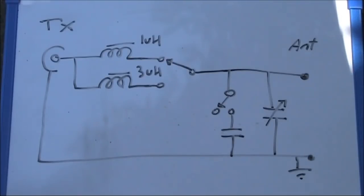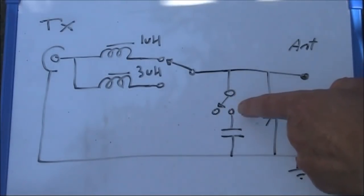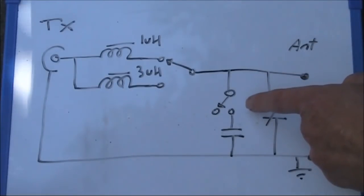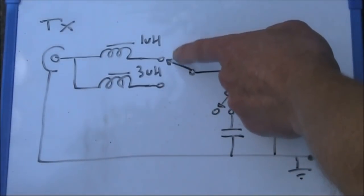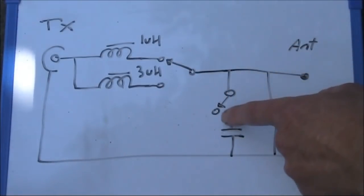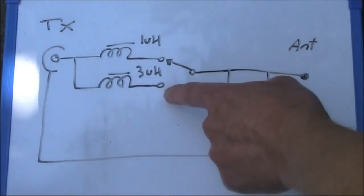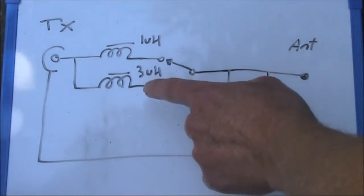But in QRP gear, you're often wanting to save space. So, instead of using two separate single pole double throw switches, like shown here, you could have it set up as a double pole switch. In other words, when the 1 microhenry is selected, then the parallel capacitor is switched out. And when the 3 microhenry is put in, then the parallel capacitor is switched in.